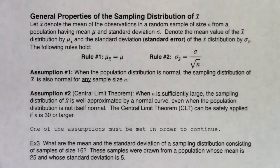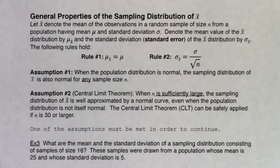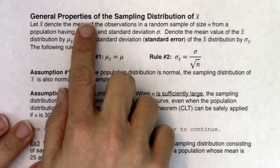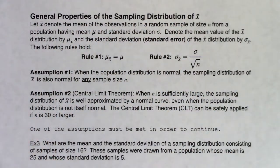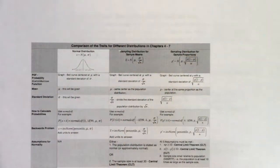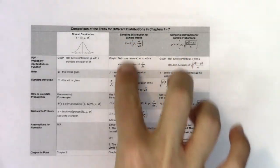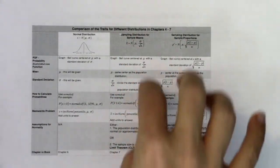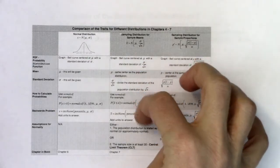They're going to seem a little confusing, or maybe a lot confusing. I'm going to show you the mechanics of how they play out in examples 3 and 4, and then we're going to look at an applet that'll hopefully deepen our understanding of what's happening here. Here are the general properties for the sampling distribution for X-bar, and you can find them in this column on your trait table.